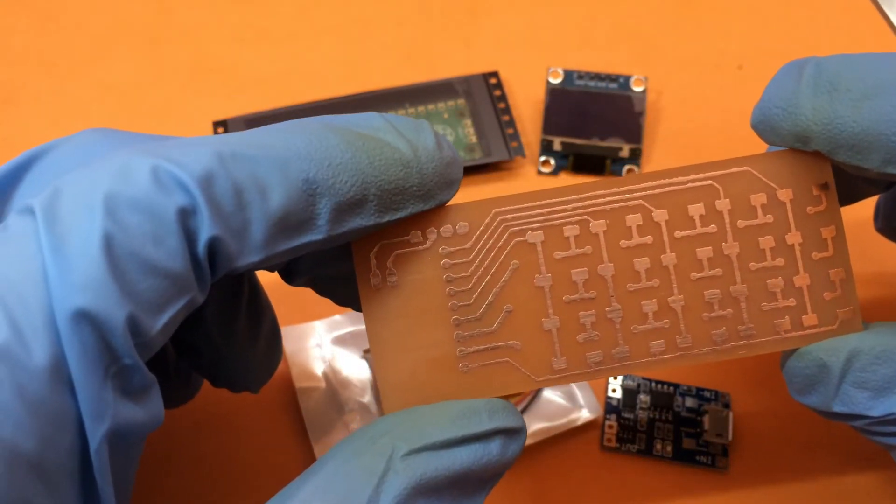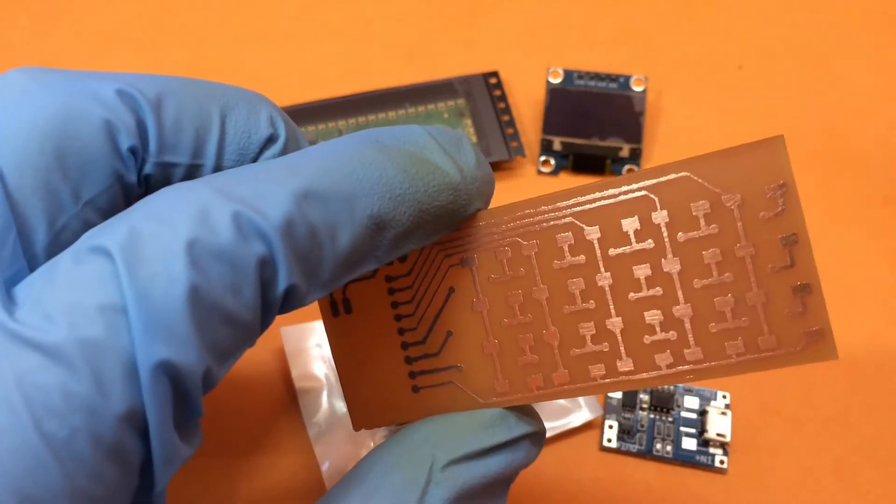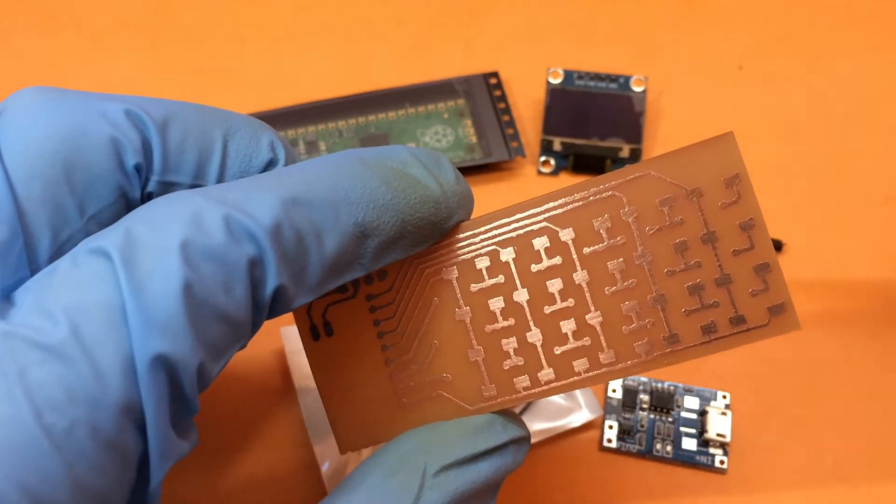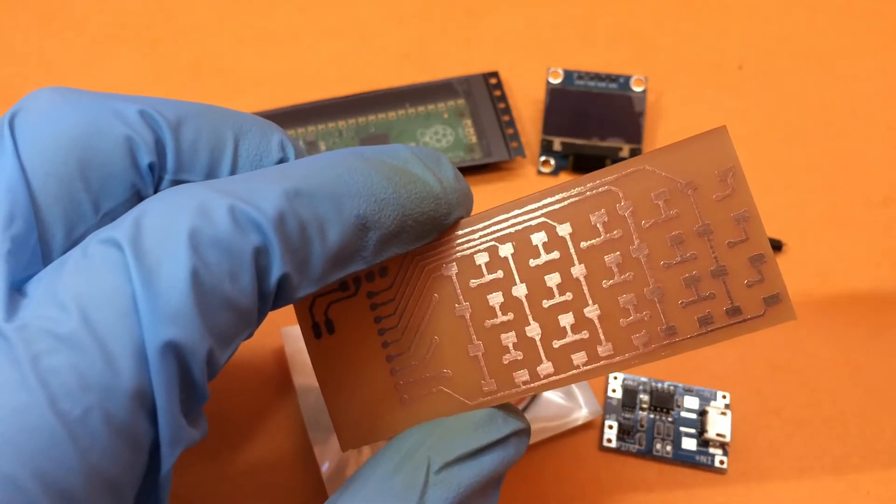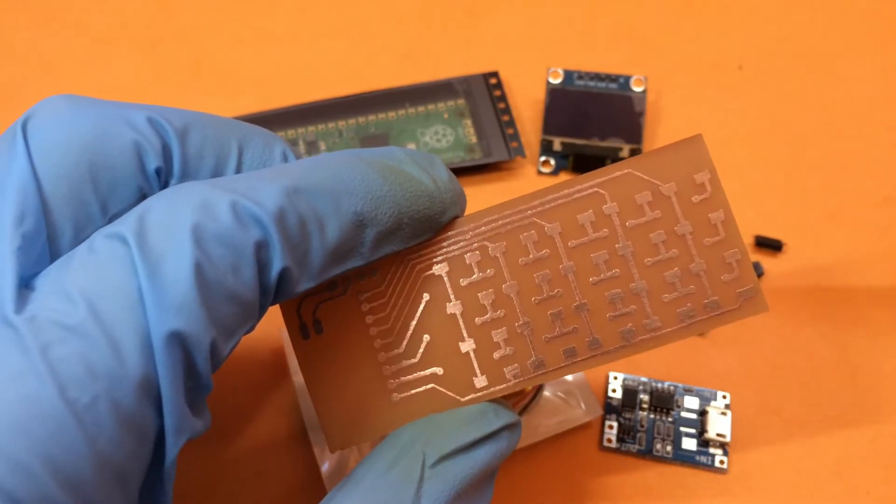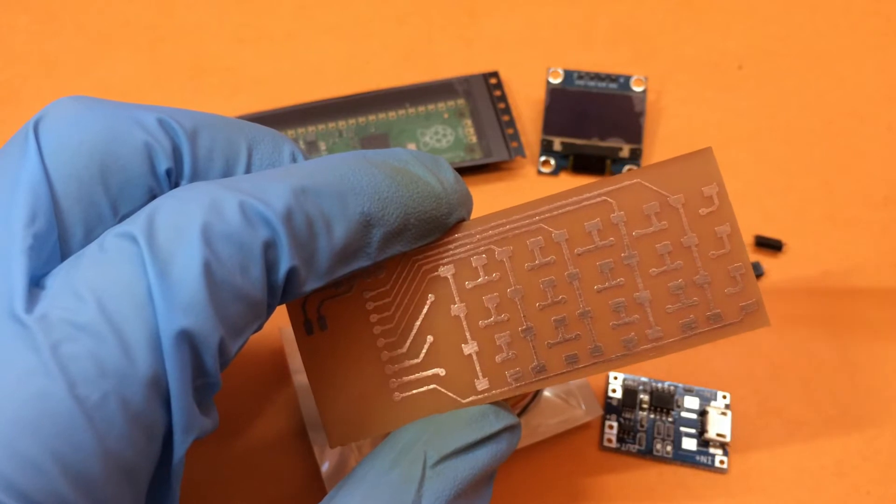If you wish to get a PCB manufactured via services like JLCPCB or PCBWAY, then I have added the Gerber file for the two layer PCB so you won't have to bridge any connections and the Raspberry Pi Pico can be soldered directly on the back of the PCB.